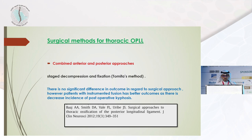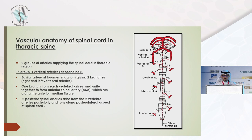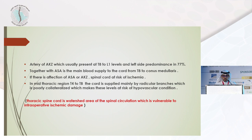Surgical challenges in thoracic OPLL: as we know, the blood supply is a watershed area in the thoracic spine. The thoracic spinal cord is a watershed area in which it is vulnerable to intraoperative ischemic damage, not only because of the pathology itself.